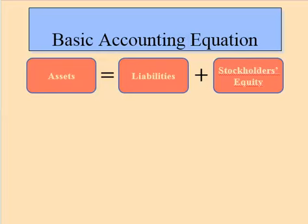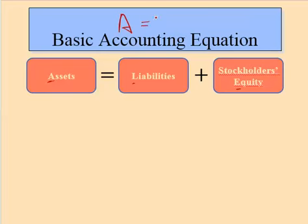Let's take a more detailed look into the basic accounting equation. We've learned already that the basic accounting equation is assets equals liabilities plus equity. Our assets are things that we own, liabilities are things that we owe, and our equity is the difference between what we own and what we owe. That was our ALE: assets equal liabilities plus equity.